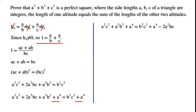So: A squared C squared plus A squared B squared plus A to the power of 4 equals B squared C squared plus A squared B squared plus A squared B squared. There is a common factor of A squared on the left-hand side, so we can write A squared times (A squared plus B squared plus C squared).